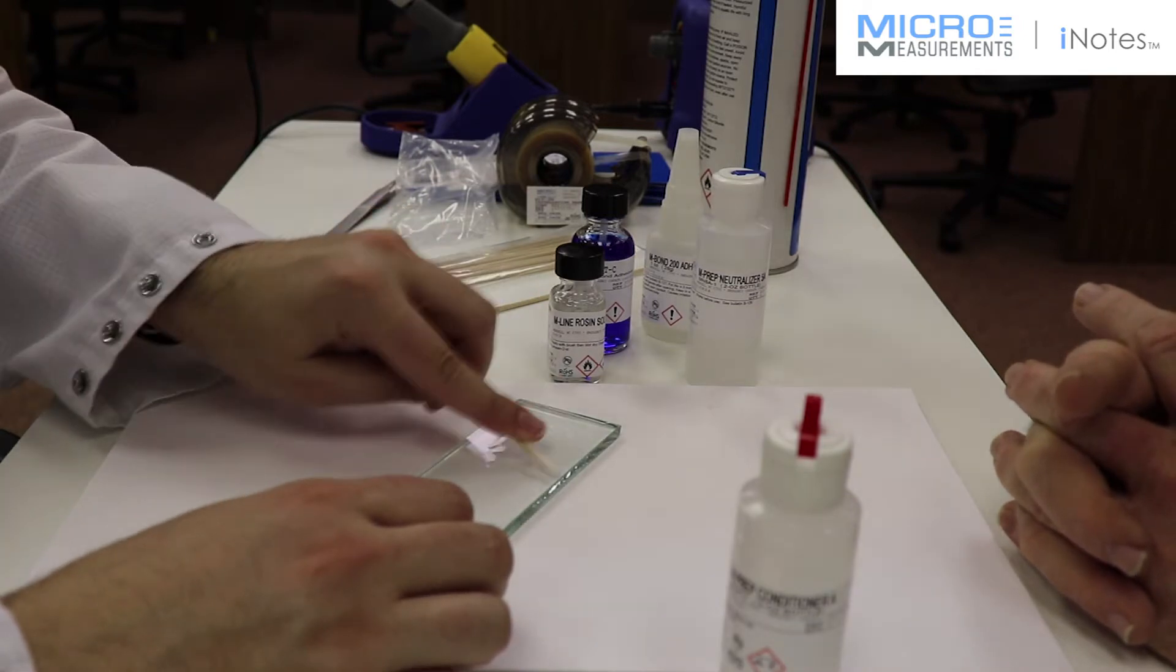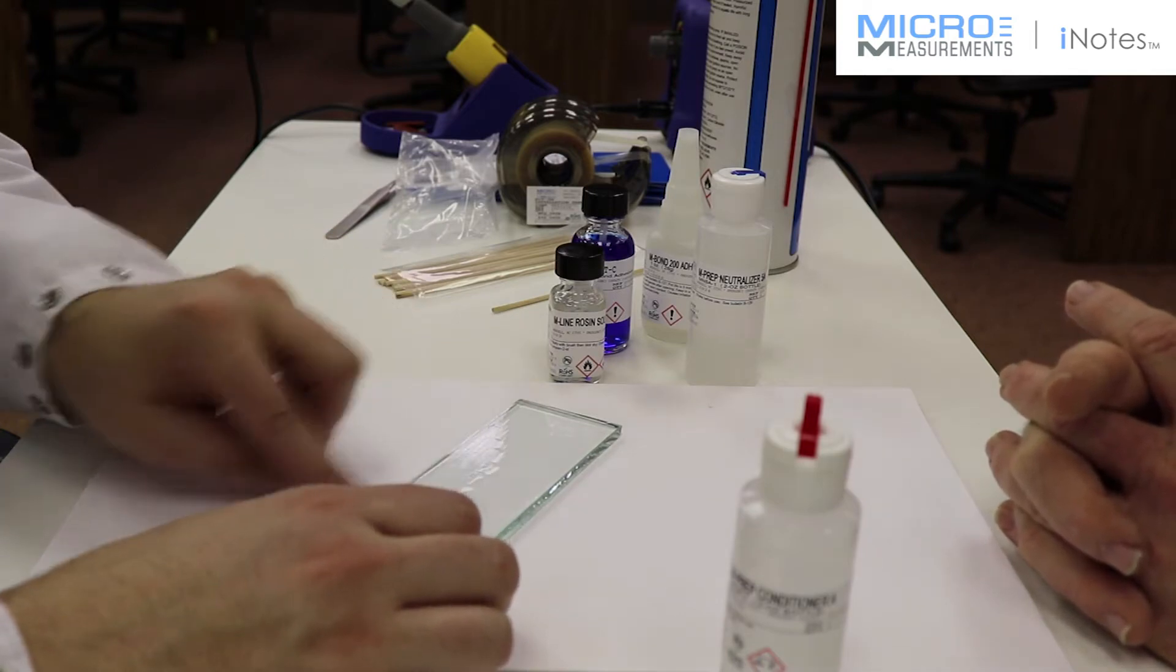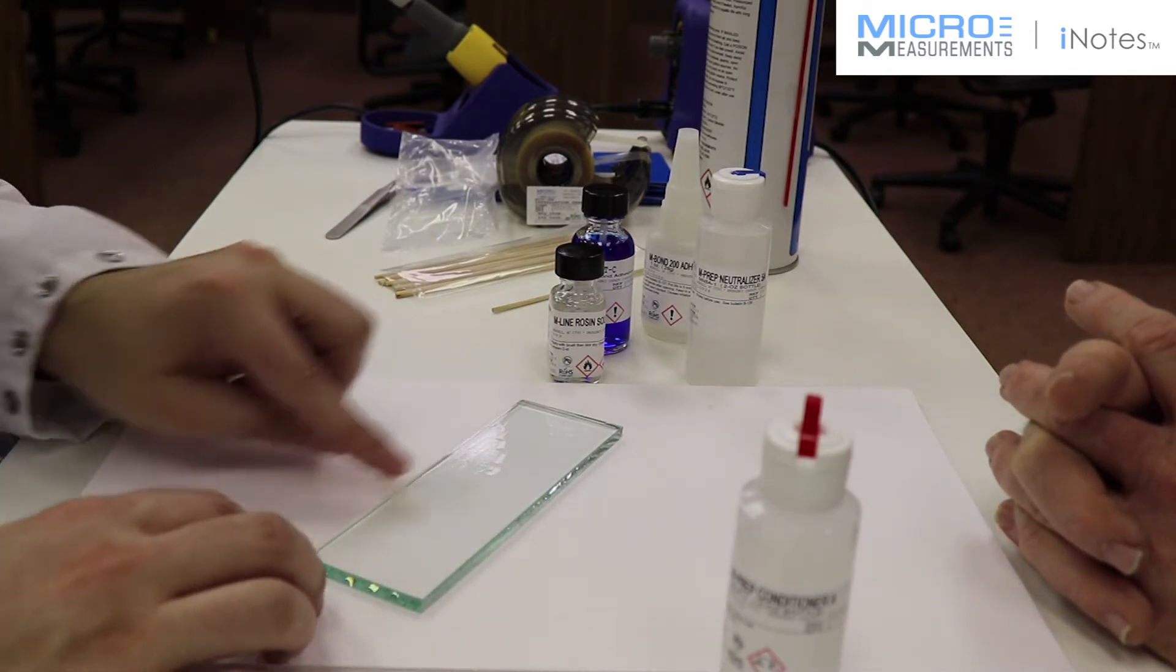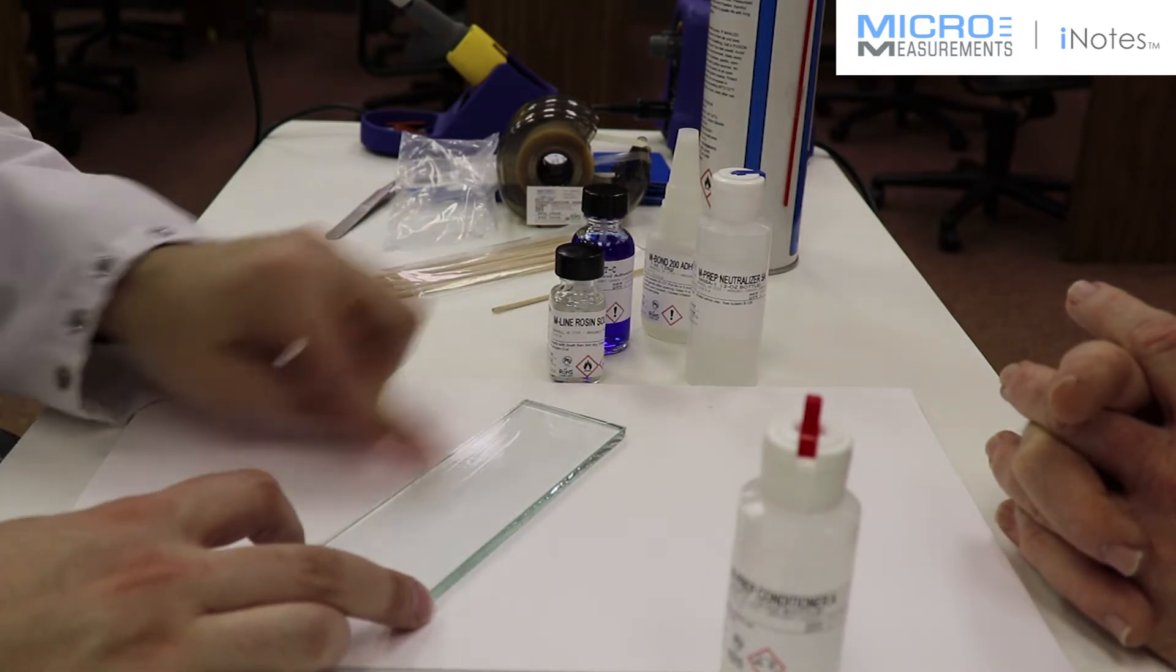Now, this removes any leftover organics and it also etches away. If it were a metal part, it would etch away part of the surface, giving you virgin metal underneath. But in the case of glass, it's just basically a good cleaning operation.